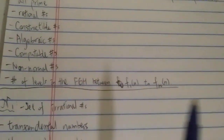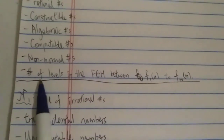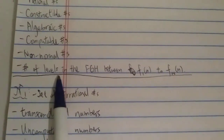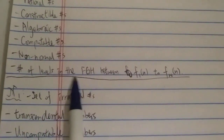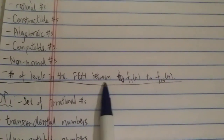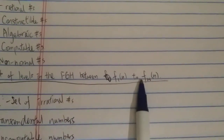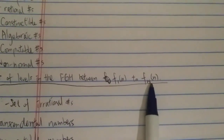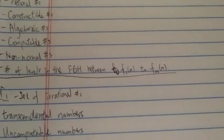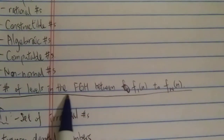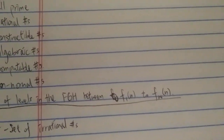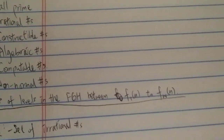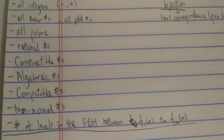First of all, let me ask you a question. How many total levels are in the fast-growing hierarchy between f₁(n) and f_ω(n)? And my second question is: how many levels are there in the entire fast-growing hierarchy? You can pause the video and try to answer it yourself.